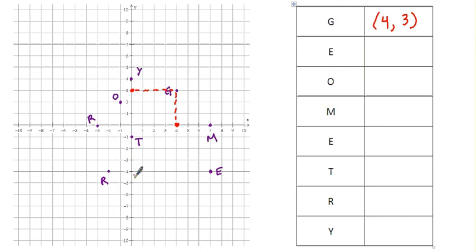One further example. Let's look at the coordinates of point R. R is two units to the left of the origin and four units below the origin. So its coordinates must be negative two, negative four.